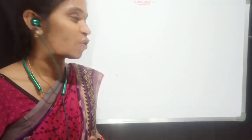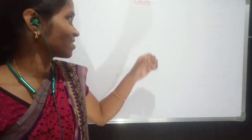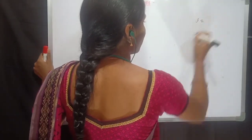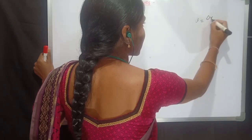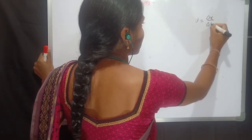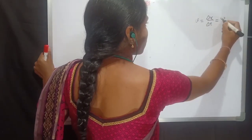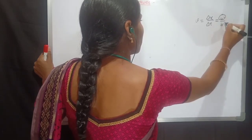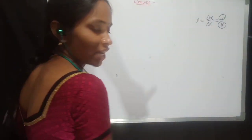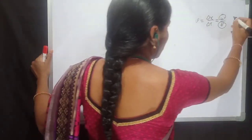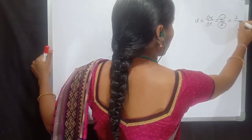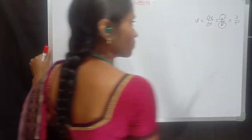Hello students, welcome to our physics classes. In our last class we had derived the equation for speed of a travelling wave, which is equal to Δx/Δt, which is equal to ω/k. And after substituting the equations of ω and k, we found out this speed is equal to λ/T.